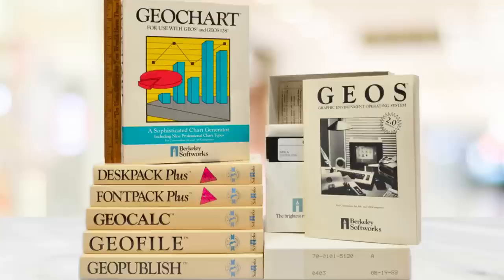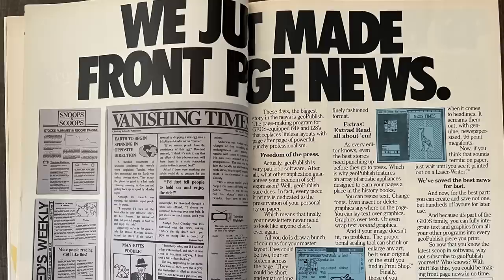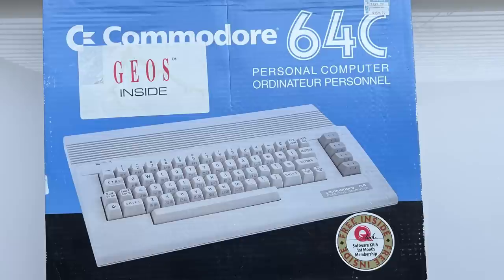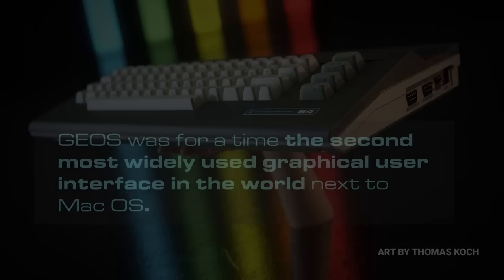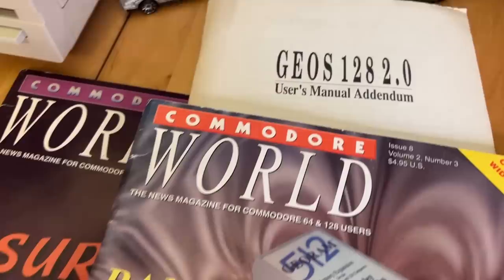In the 1980s, the Macintosh began to dominate the desktop publishing world — for a price. GEOS brought world-class word processing and productivity software to the affordable Commodore 64 in a way C64 users had never seen before. At its peak, thanks to Commodore bundling GEOS with its C64C computers, GEOS was for a time the second most widely used graphical user interface in the world, next to macOS.